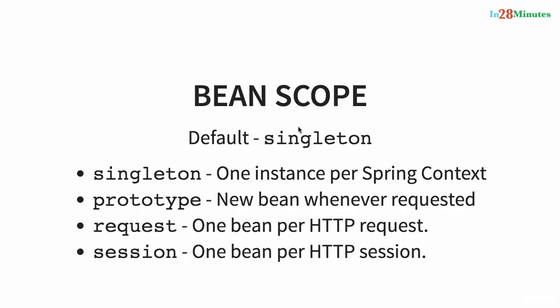Welcome back! We are discussing Bean Scopes. We talked about singleton, prototype, and also something called proxy in the last step. In this step, let's find the difference between a typical singleton pattern. Whenever we talk about singleton, we are talking about Gang of Four design patterns. How does the singleton there compare with a Spring context singleton? That's what we want to talk about.